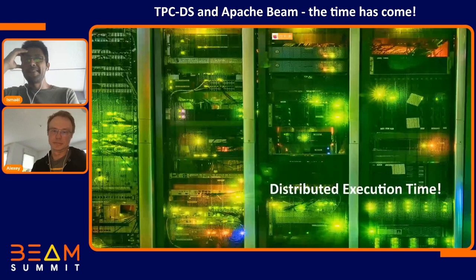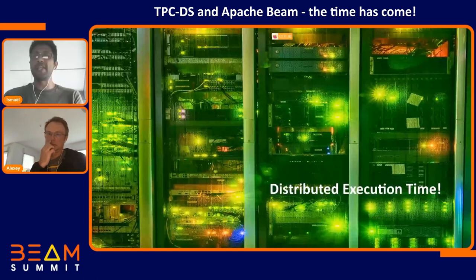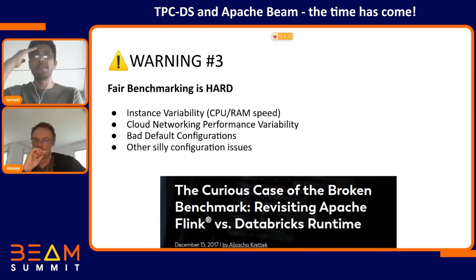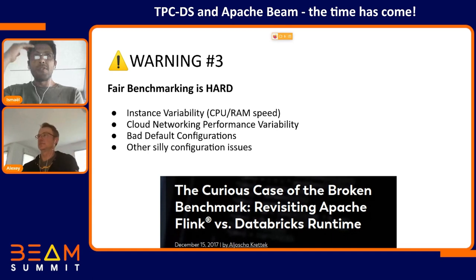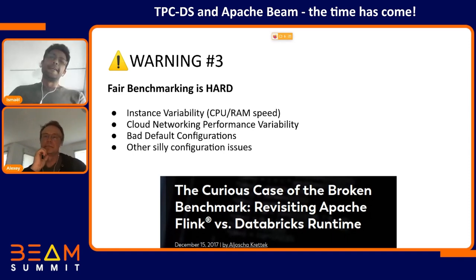Now it's time to run this in a distributed system in clusters. Warning number three: making fair benchmarks in the cloud is really hard. Different instances can vary a lot in CPU and RAM speed depending on the cloud vendor, so one instance in one vendor is not exactly equivalent in another. Sometimes you have network issues or negotiations against the distributed file systems, each cloud and Spark distribution has different default configurations that can affect results, and sometimes we just don't know about configuration issues that can produce very different results.